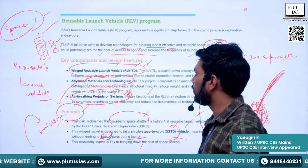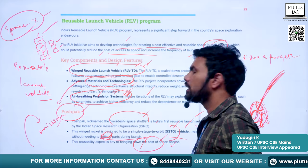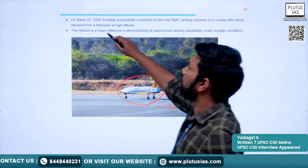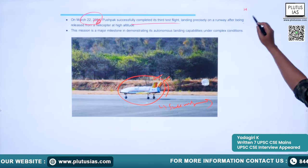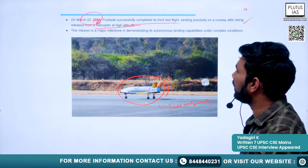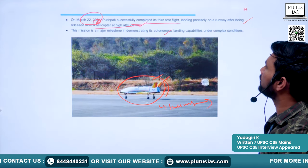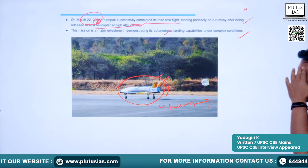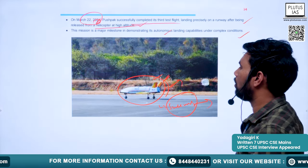On March 22, the Pushpak RLV successfully completed its third test flight, landing precisely on a runway after being released from a helicopter at high altitude. This mission is a major milestone in demonstrating its autonomous landing capabilities under complex conditions.